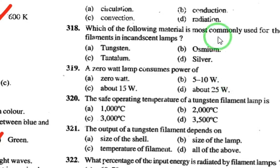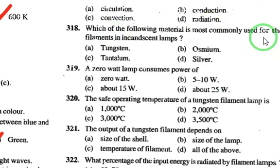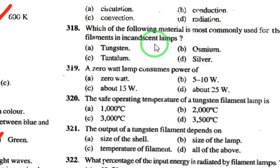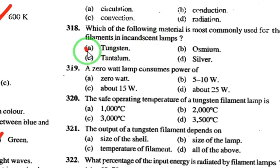The most commonly used material for the filament in an incandescent lamp is tungsten.